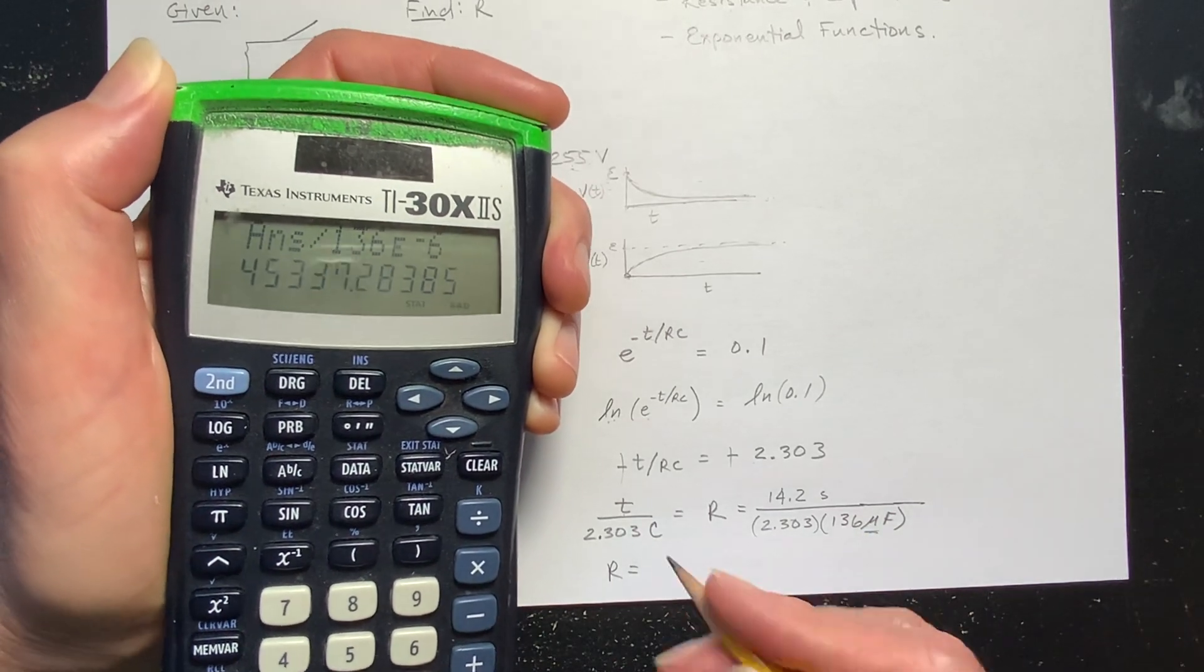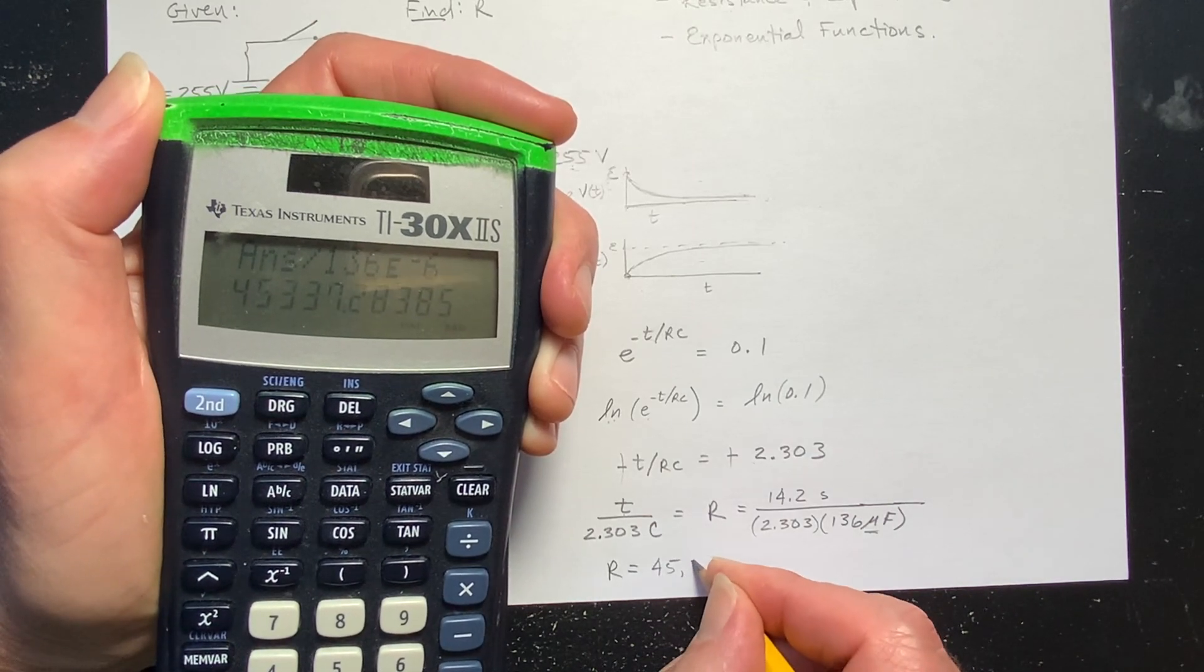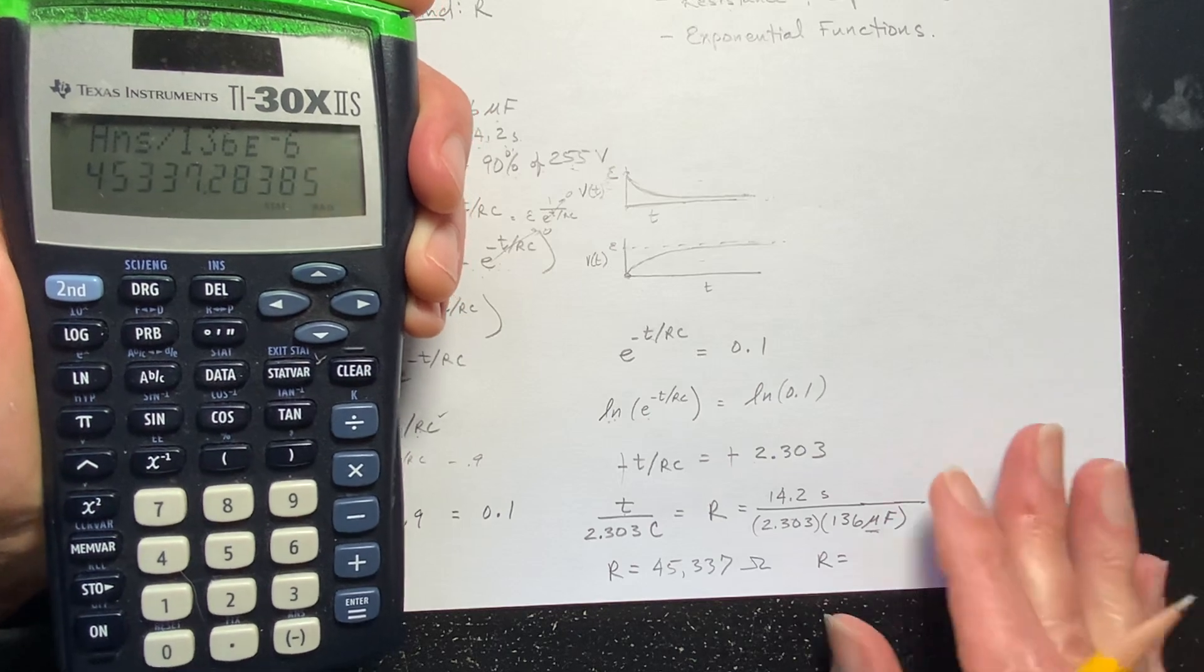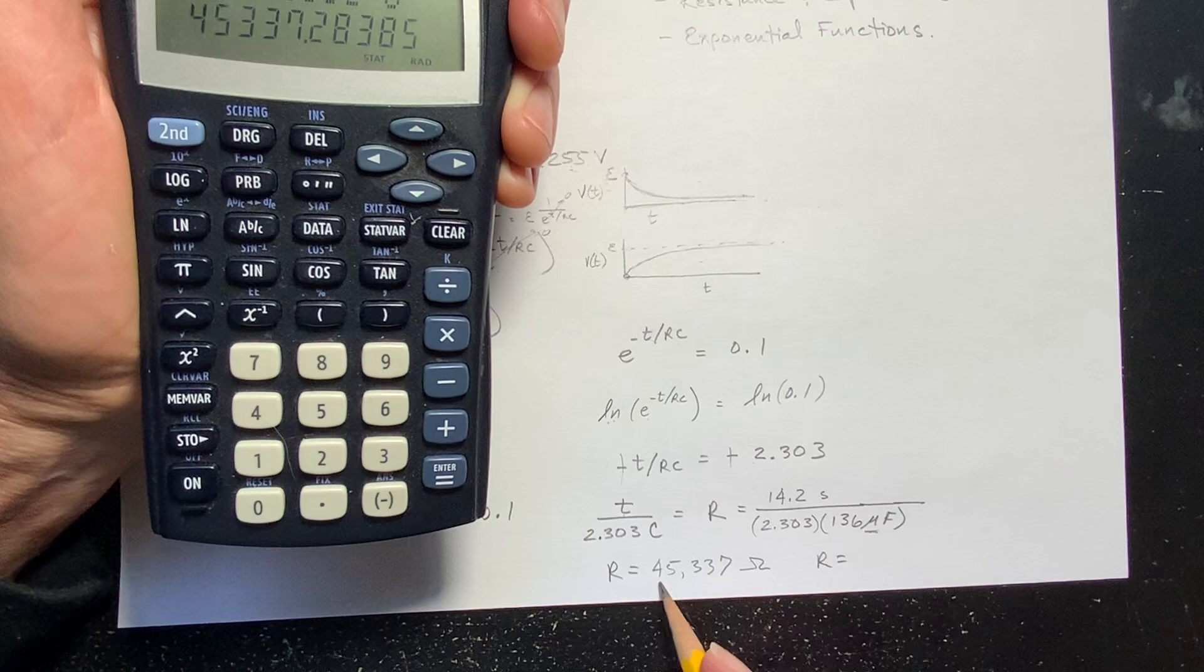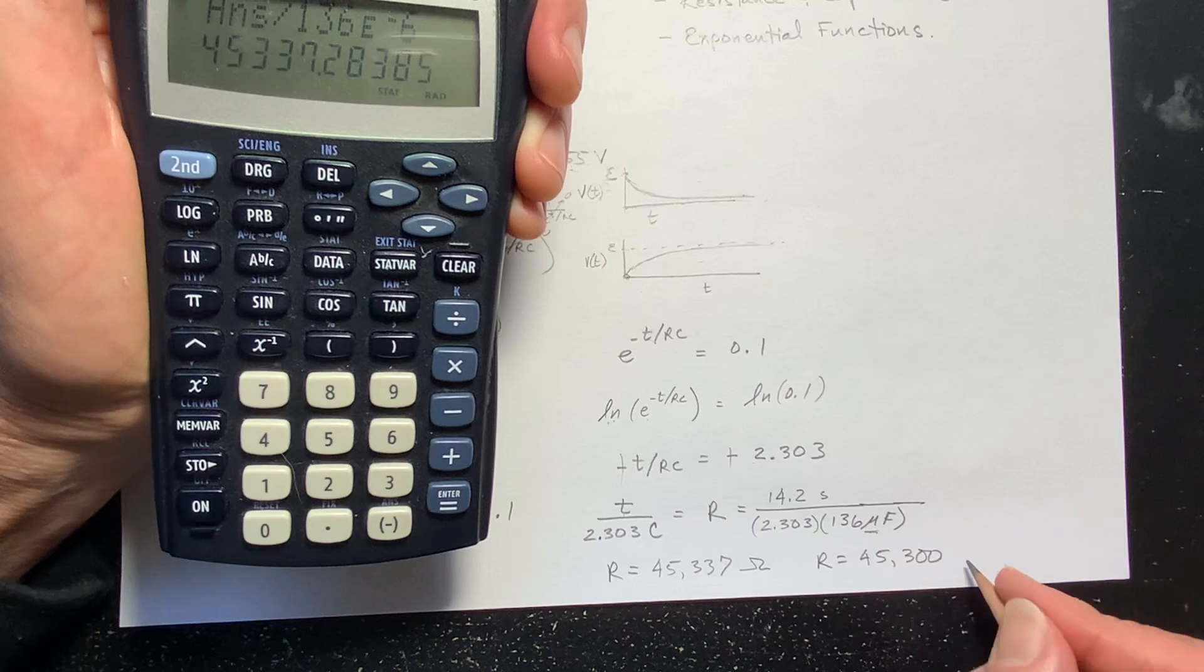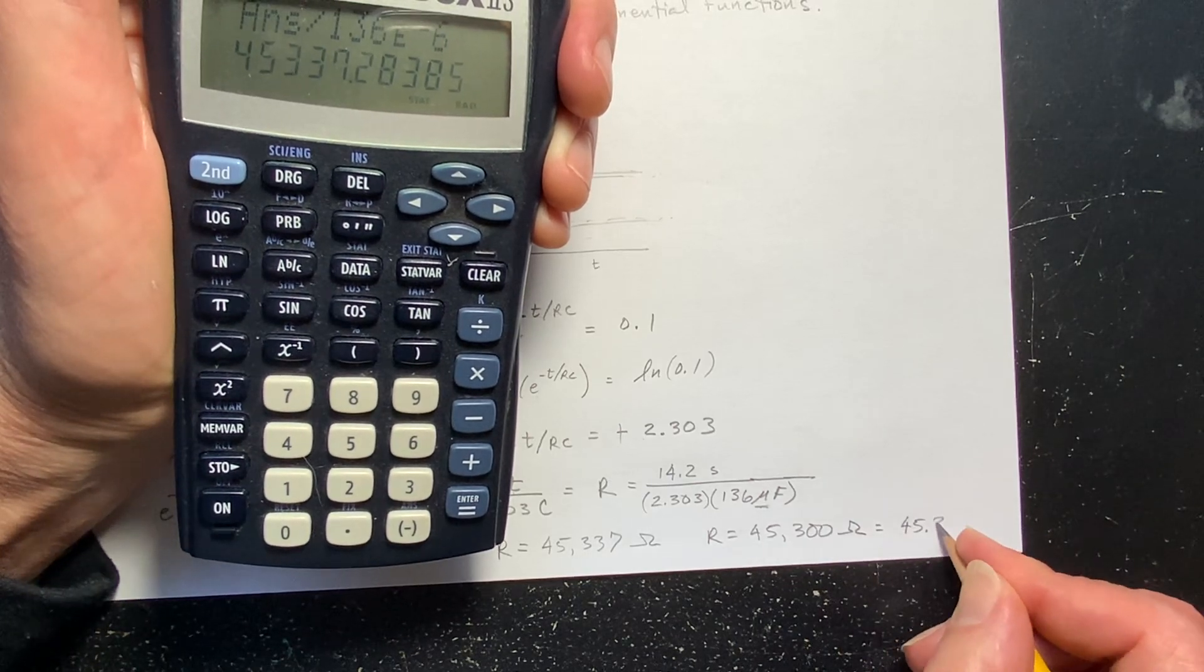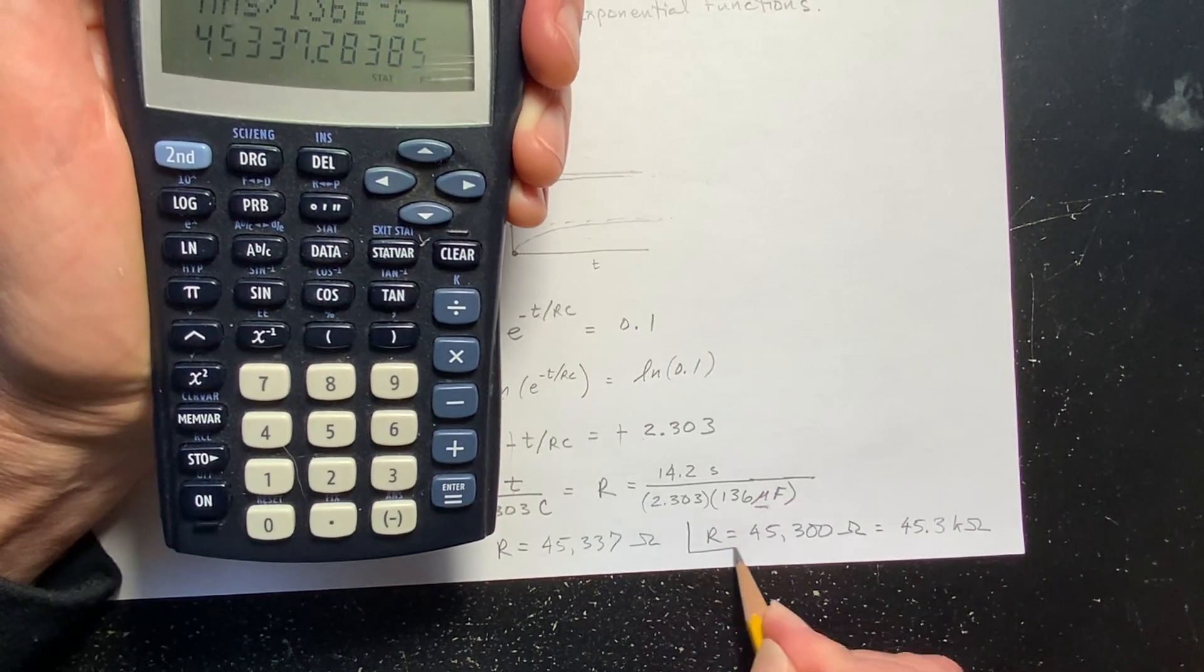Equals, and you get our answer: 45,337 ohms. Or I probably should round this off, right? I've got three significant figures. If I round this to three significant figures, I'm going to get 45,300 ohms. Or you could write it as 45.3 kiloohms. But I think the problem said to leave it in ohms. So this is actually our answer right here.